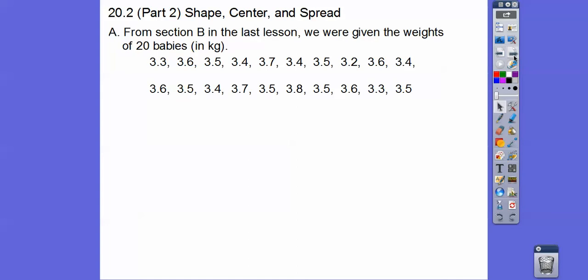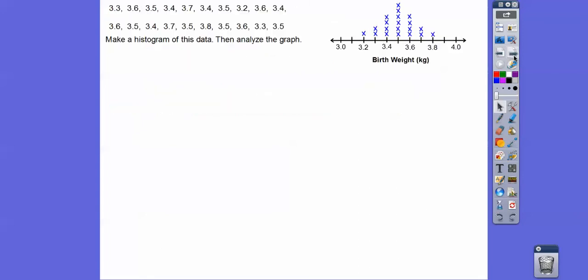In section B of the last section, you're given the 20 weights of babies in kilograms. You don't have to write down those 20 numbers again, but what we're going to do is make a histogram of that data and then analyze the graph. Since we already made a line plot of that data, it's really going to be helpful for us to make a histogram. If we didn't do this, then I'd have to make a frequency table and calculate how many of each number we had. A frequency table would be, on the left would be the numbers, on the right would be the frequencies.